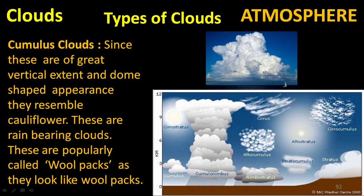Cumulus clouds have great vertical extent and a dome-shaped appearance — they resemble a cauliflower. These are rain-bearing clouds and are popularly called wool packs because they look like wool packs.